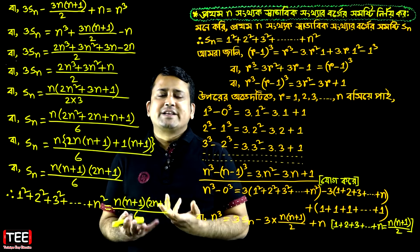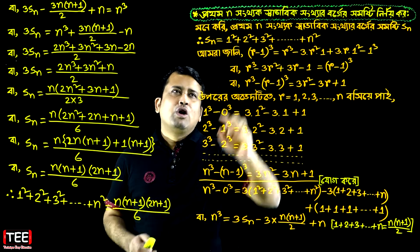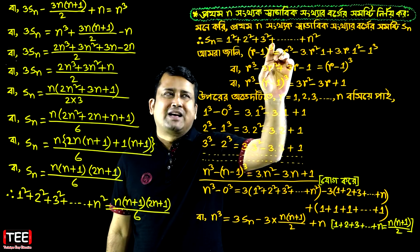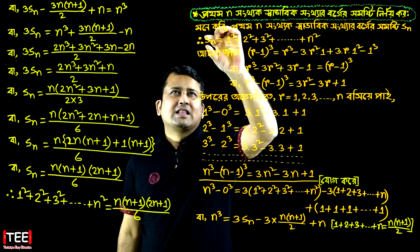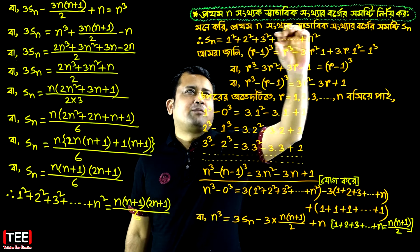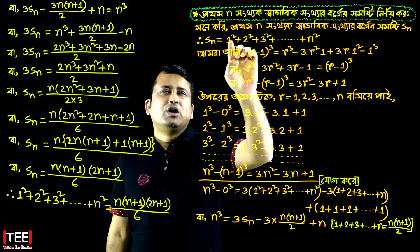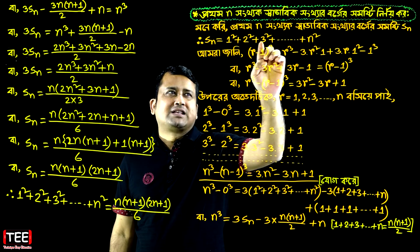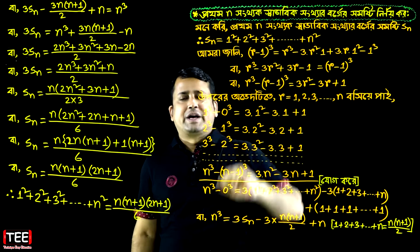Let Sₙ equal 1 squared plus 2 squared plus 3 squared plus dot dot dot plus n squared. So Sₙ equals 1 squared plus 2 squared plus 3 squared plus dot dot dot plus n squared.